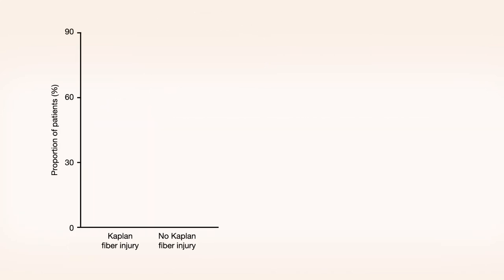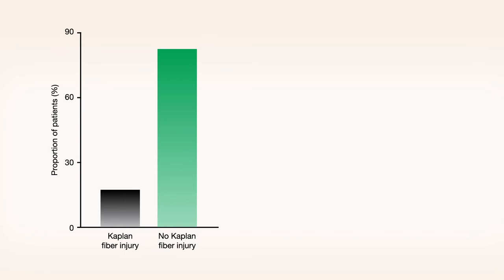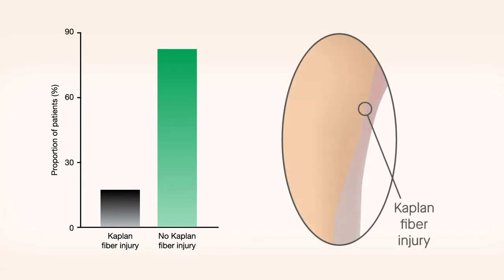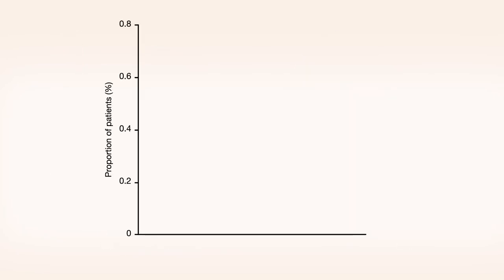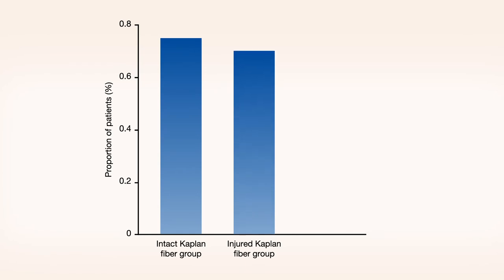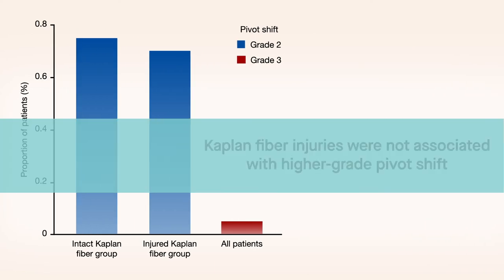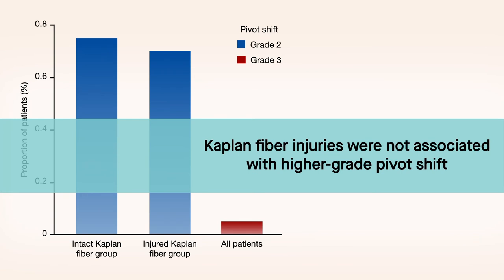Only 47 patients, or approximately 18% of all patients, showed a Kaplan fiber injury. The majority of patients in the intact and injured Kaplan fiber groups had a grade 2 pivot shift, while only about 5% of all patients had a grade 3 pivot shift. When present, Kaplan fiber injuries were not associated with higher grade pivot shift.